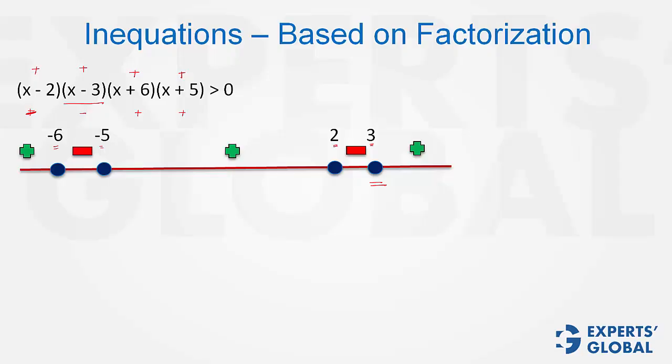So the rightmost value is always going to be positive, and then you will have alternate negative and positive signs.